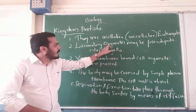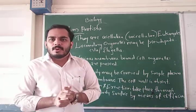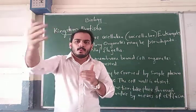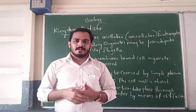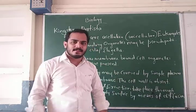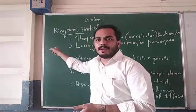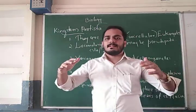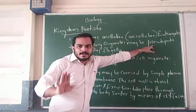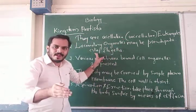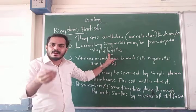The second feature: the locomotory organs may be Pseudopodia, Cilia, or Flagella. Locomotory means the ability to move from one place to another. In the case of birds, wings help locomotion. Human beings use legs for walking. In the case of smaller organisms from Kingdom Protista, some use Pseudopodia, some use Cilia, and some other organisms may be flagellated.